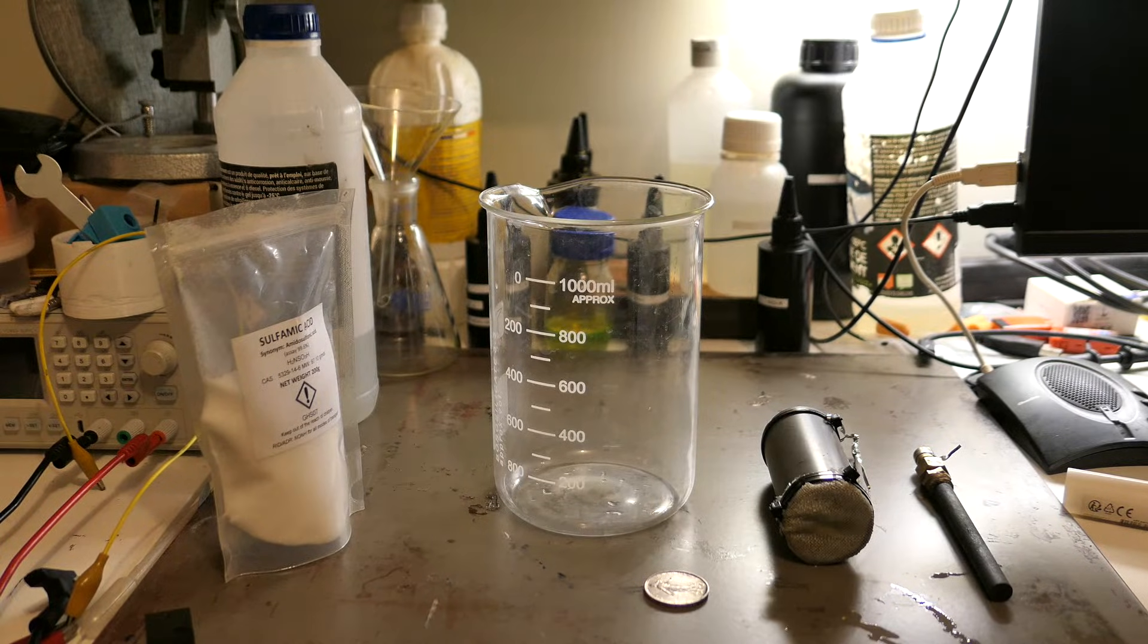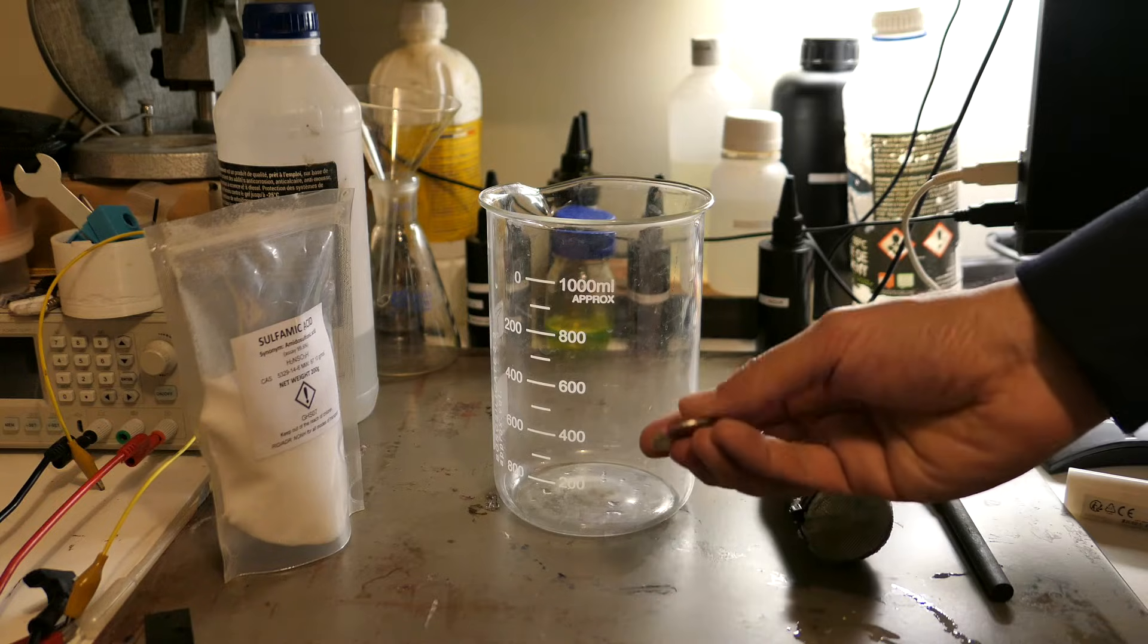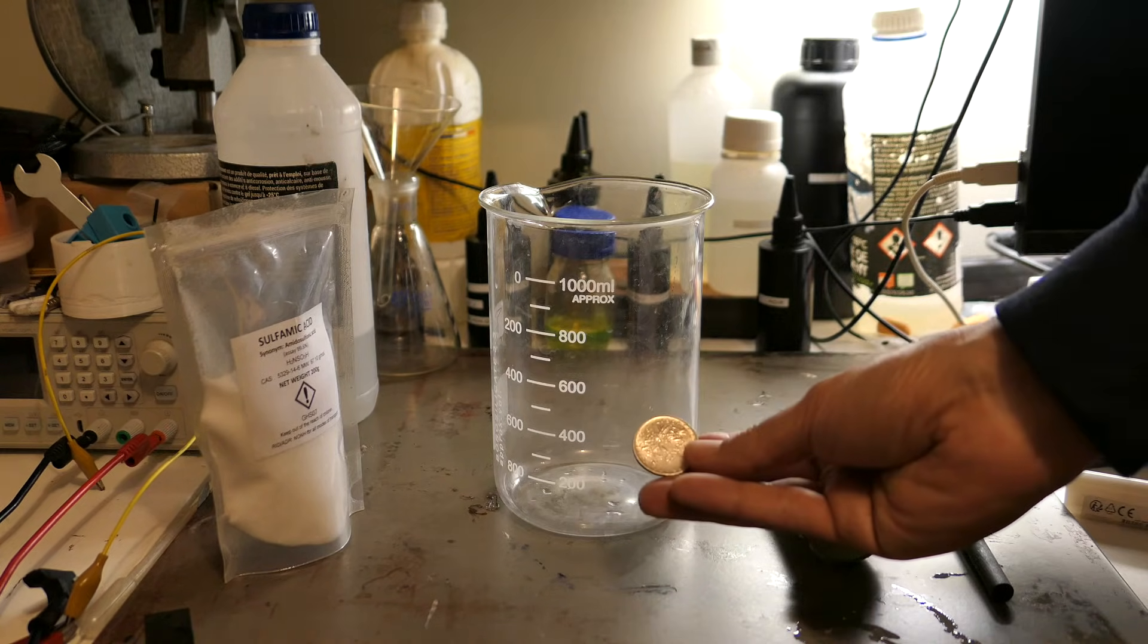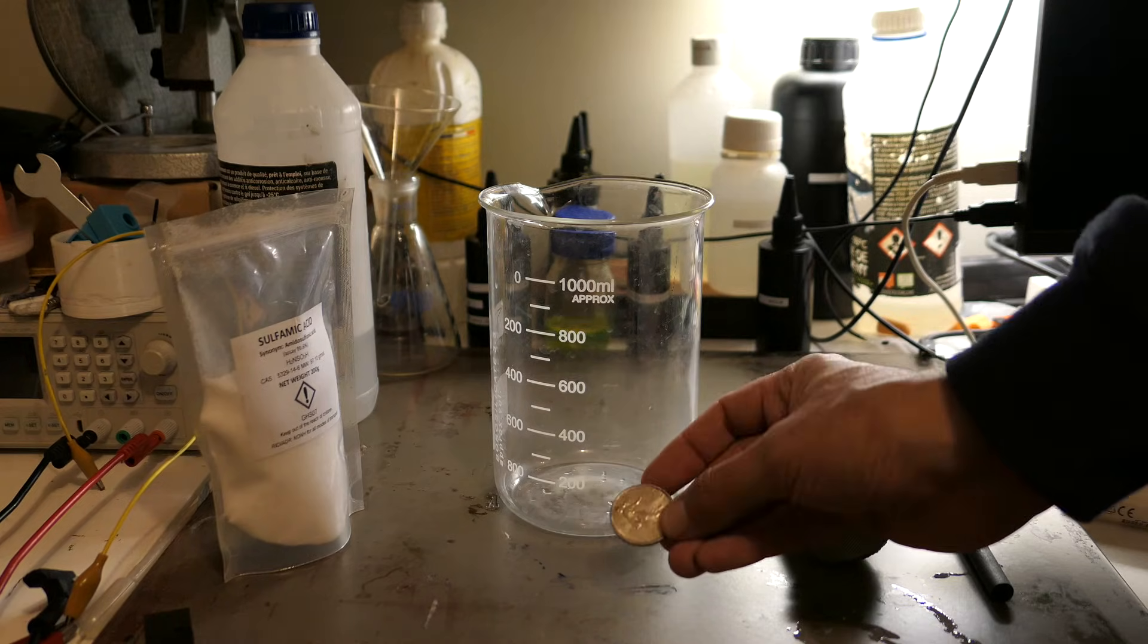Welcome back to the channel. Today we're going to talk about an exciting new method for refining impure silver, such as coins, cutlery, or old jewelry, using an electrolytic cell.